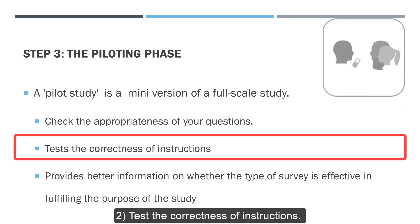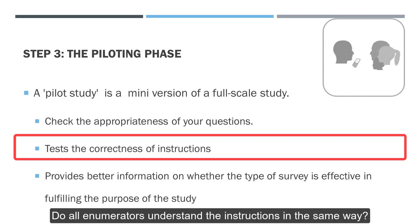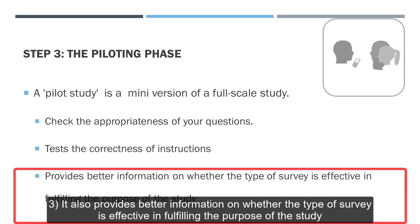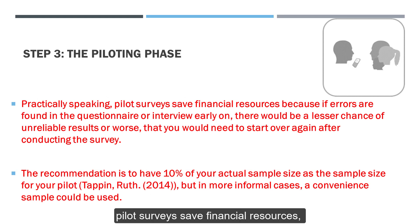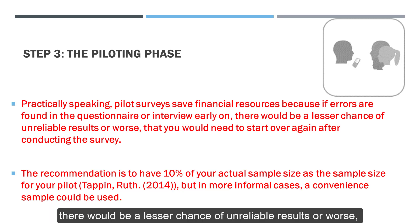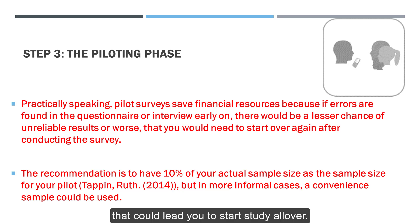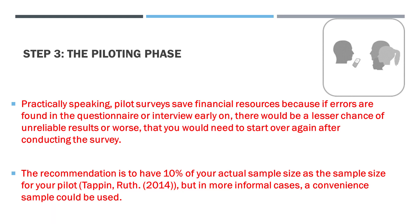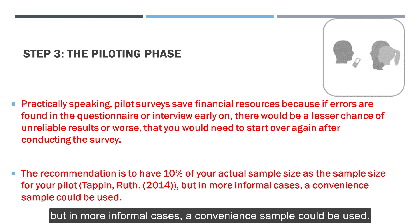A pilot study also helps to test the correctness of instructions — do all enumerators understand the instructions in the same way? It also provides better information on whether the type of survey is effective in fulfilling the purpose of the study. Practically speaking, pilot surveys save financial resources because if errors are found in the questionnaire or interview early on, there will be a lesser chance of unreliable results or worse, having to restart the study. The recommendation is to have 10% of your actual sample size as a sample size for your pilot, but in more informal cases a convenient sample could be used.